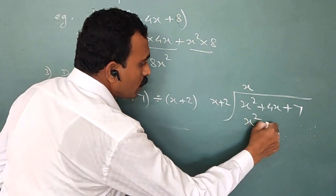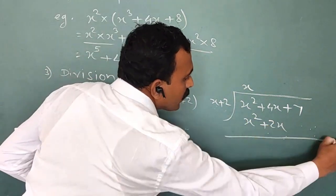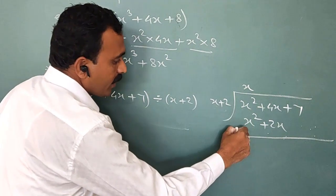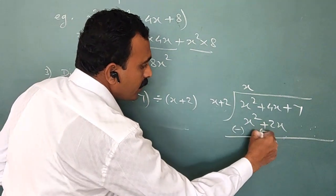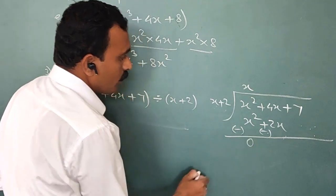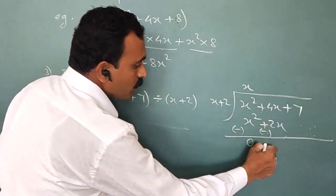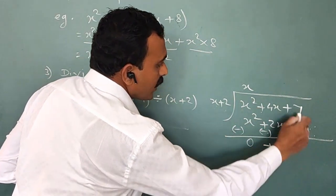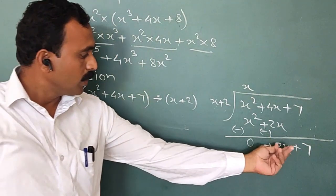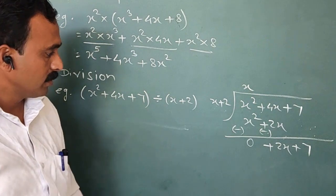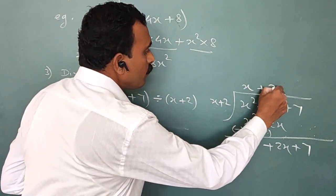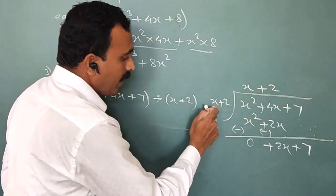Write the result aligned with like terms. Now subtract — apply the minus sign: x² - x² = 0. Here 4x - 2x = +2x, and bring down +7. Now divide 2x by x: 2x ÷ x = 2.